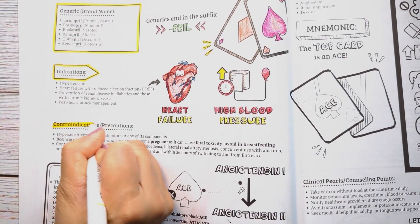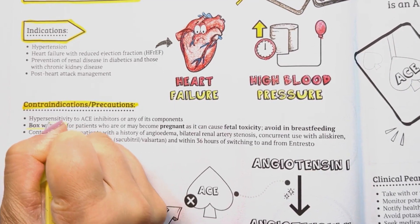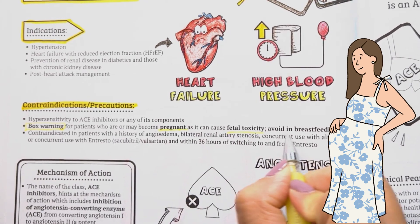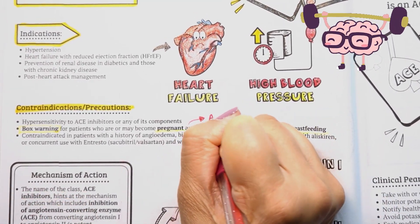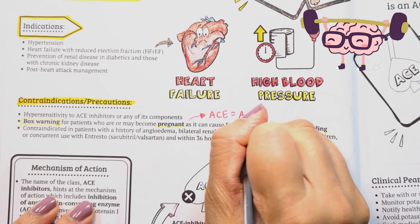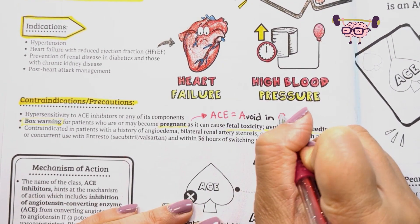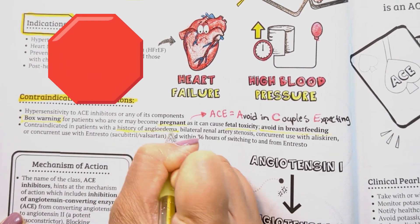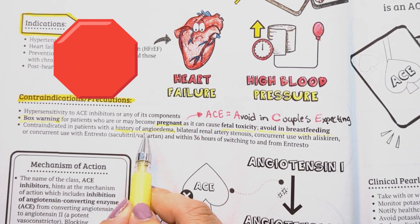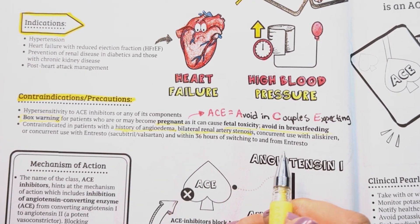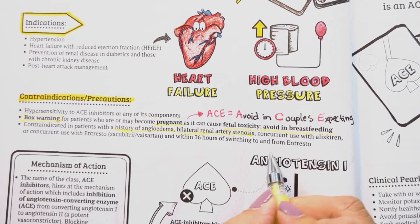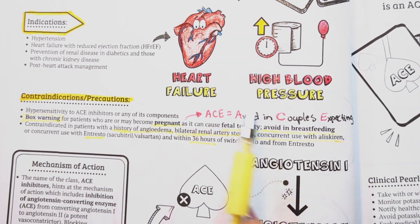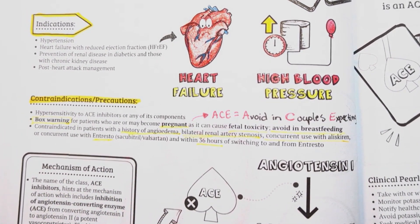Some contraindications and precautions to keep in mind. ACE inhibitors should not be used in patients who are pregnant, as it can cause fetal toxicity. You also want to avoid it in breastfeeding. The mnemonic A stands for avoid in couples expecting, mainly the moms. Also, make sure to check patients' allergies — it is contraindicated in patients with a history of angioedema, or sudden swelling that usually occurs in the face, lip, or tongue. It requires a 36-hour washout period when switched to and from Entresto, the combination medication consisting of sacubitril and valsartan.